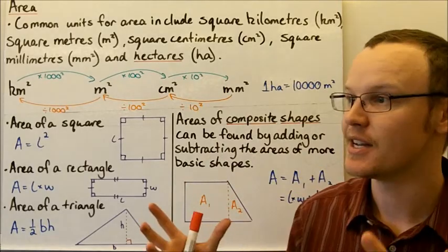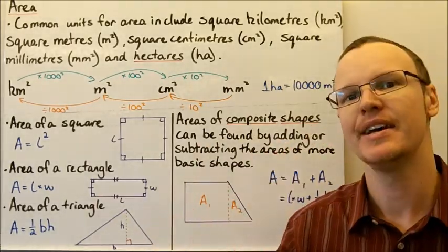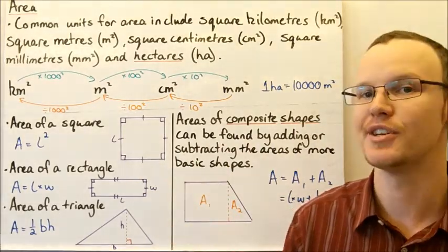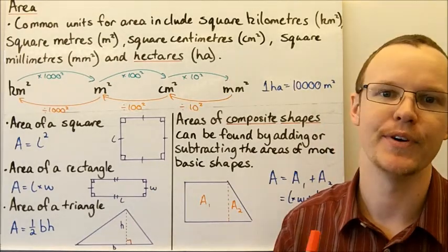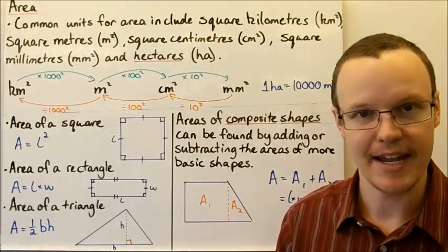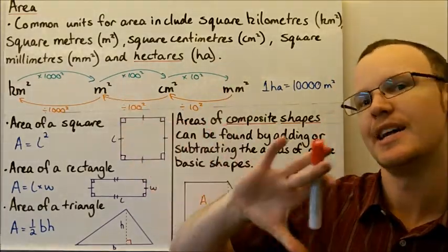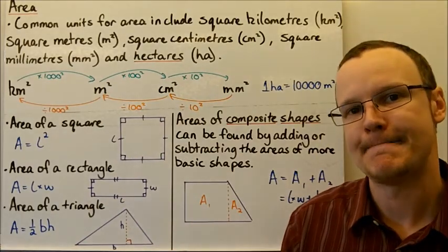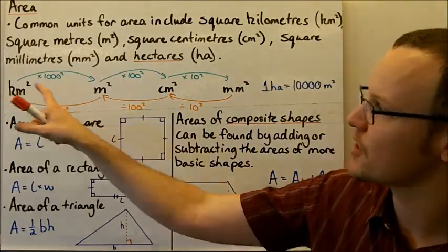When looking at area, we consider things like wall space that we might need to paint, and knowing the amount of paint needed to cover a certain area. We also think about working in our backyard for landscaping and grass area, as well as larger applications in engineering when we look at larger areas.